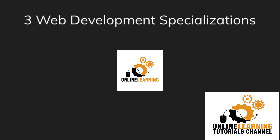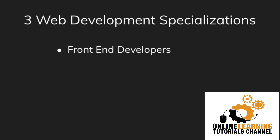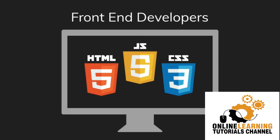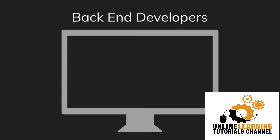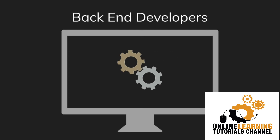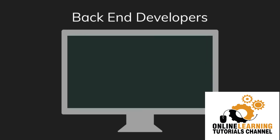With larger organizations they'll also break up the web development teams into front-end teams, back-end teams, and even a graphic design team. There are three kinds of web development specialization: front-end, back-end, and full-stack web developers. Front-end developers deal with the layout and the visuals of the website, while back-end developers deal with the functionality of the website.